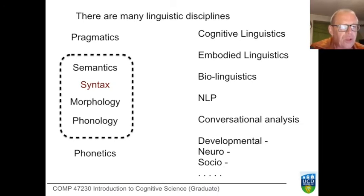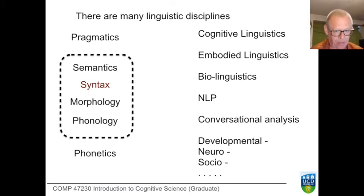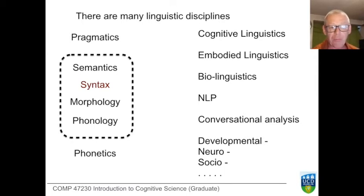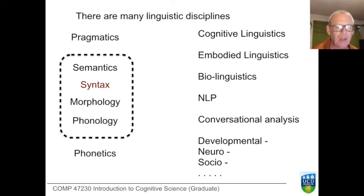We're now going to look at the sub-disciplines of generative linguistics. Linguistics is a very broad field — language features in all our goings on and in the way we understand the world. We're going to take through the six disciplines: pragmatics, semantics, syntax, morphology, phonology, and phonetics. The middle four — semantics, syntax, morphology, and phonology — are the core disciplines of generative linguistics.